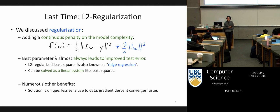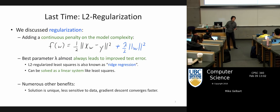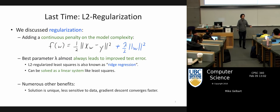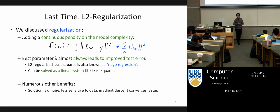When we talked about robust losses for regression, we discovered there are some pretty serious implications if you change the loss from squared error to absolute value error — it actually does something quite different with interesting properties. We'll see again today that just changing a norm has pretty serious implications.